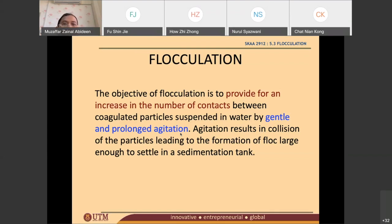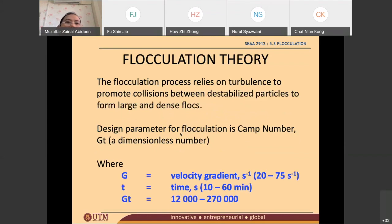Before we learn on the flocculation, we need to know the flocculation theory. The first important thing for you to know on flocculation is you have to know the Camp number. Camp number is G times t. I repeat for the third time, Camp number is Gt. It is a dimensionless number, no units.